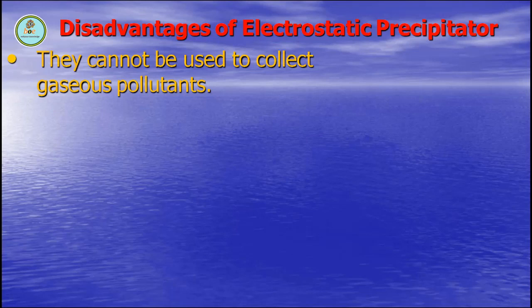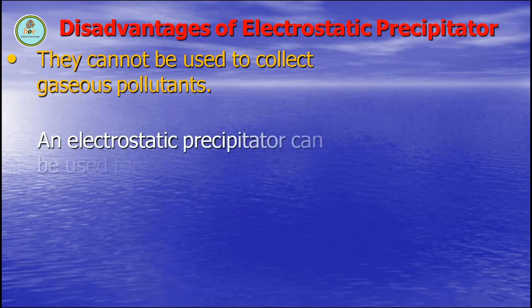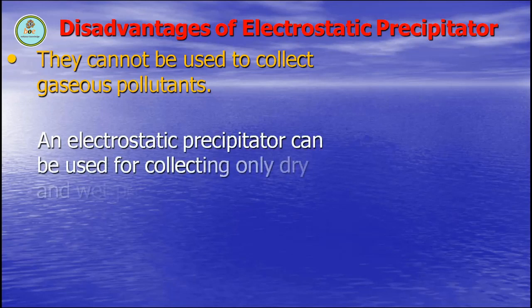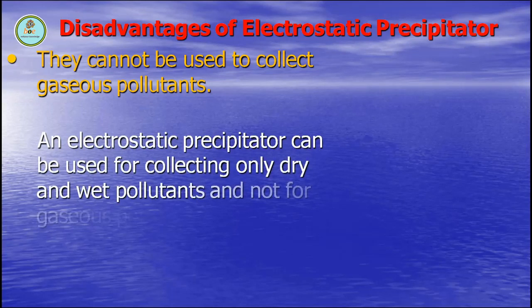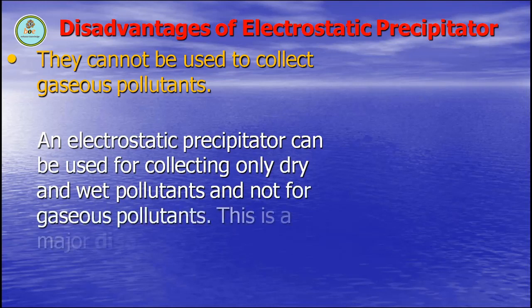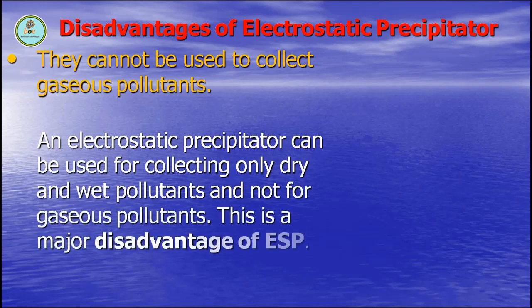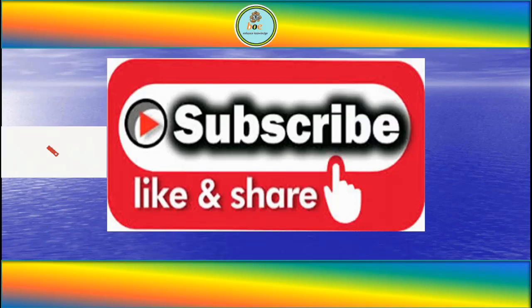Finally, electrostatic precipitators cannot be used to collect gaseous pollutants. An electrostatic precipitator can be used for collecting only dry and wet pollutants, not gaseous pollutants. This is a major disadvantage of ESPs.